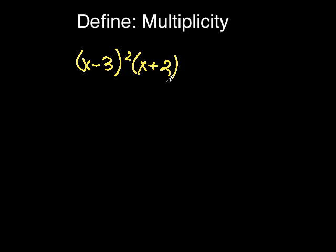you can say that the factor x minus 3 has a multiplicity of 2, or that the zero of 3 has a multiplicity of 2.